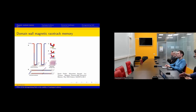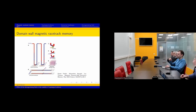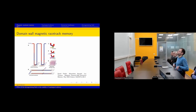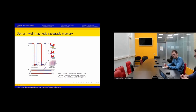The minimal distance between two domain walls depends on the material, but it can be very, very small — measured in nanometers. So the density can be very, very high. And if we take into account that this is a 3D crystal — not a flat 2D layer — we can obtain very high density of information.